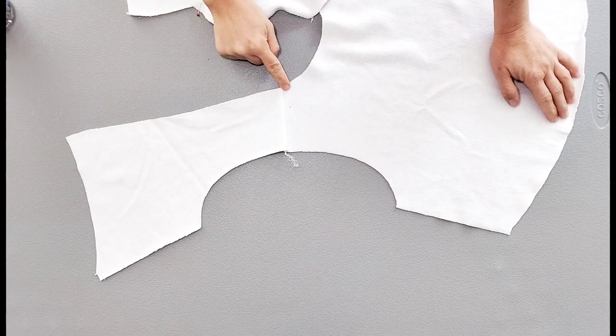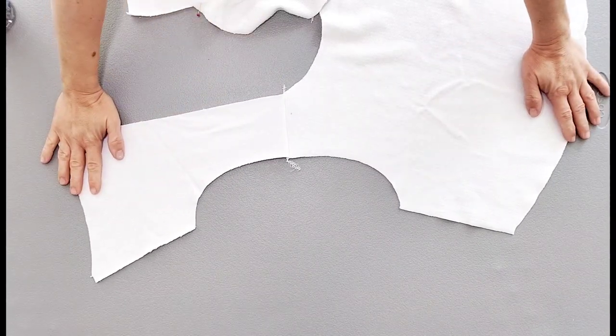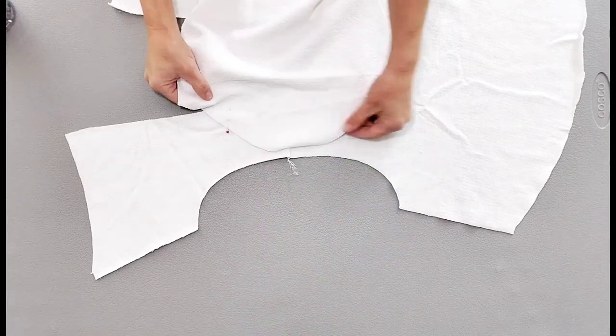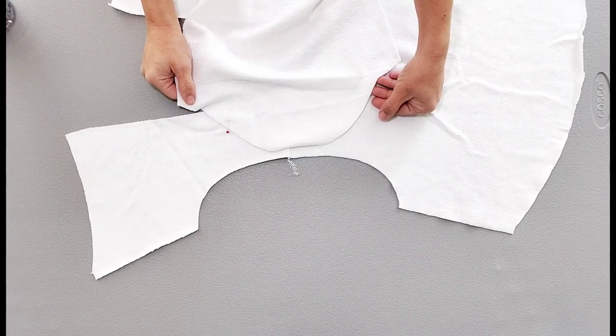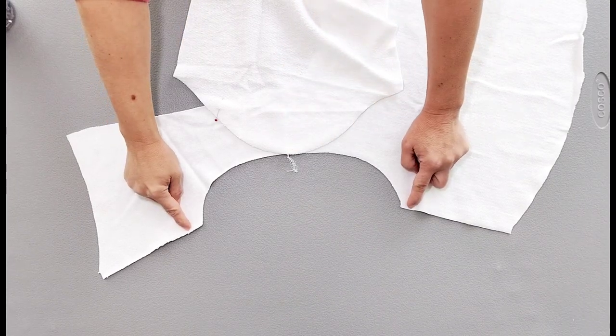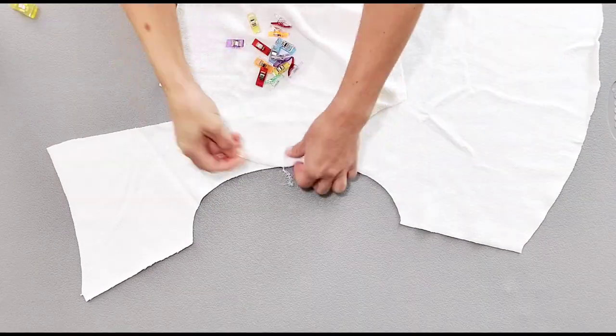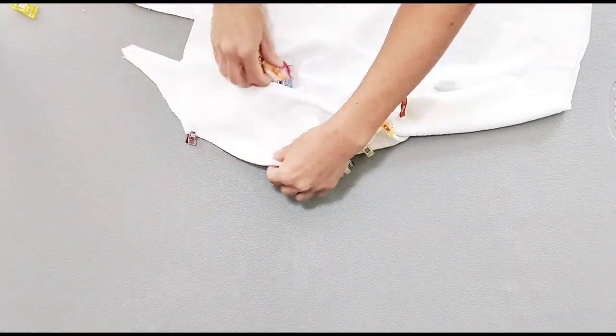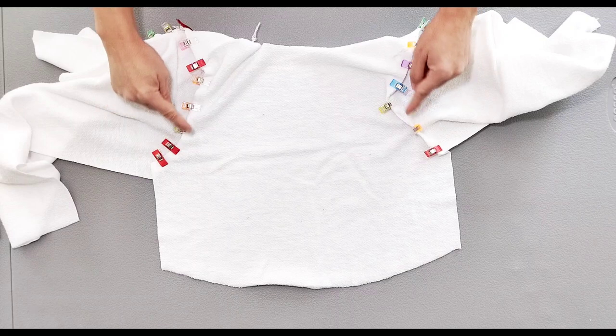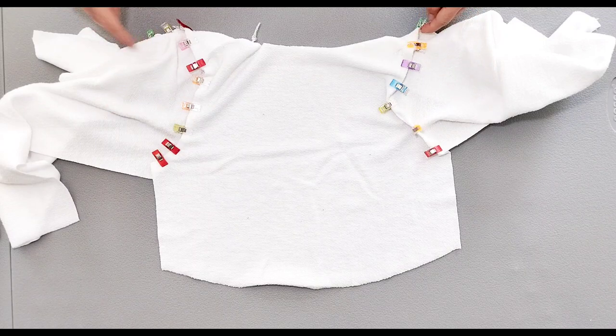Now that our shoulder is sewn, I've opened up my bodice right side up and I'm going to grab my sleeve piece and place them right sides together matching my shoulder seams and my underarm seams and clip. Do this for both sleeves and then take it to your machine and serge or sew with a quarter inch seam allowance.